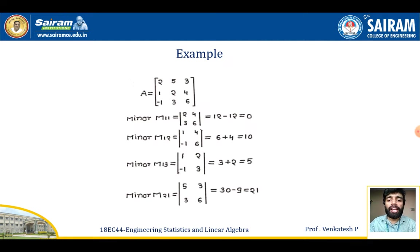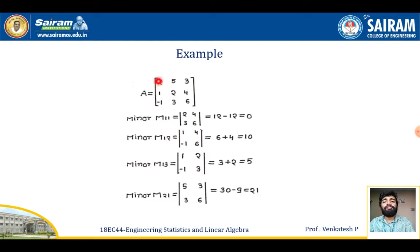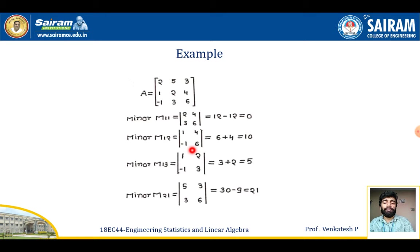For example, let A be the 3×3 matrix: [2, 5, 3; 1, 2, 4; −1, 3, 6]. To find the minor M11 of the entry 2, we take the determinant of [2, 4; 3, 6], which equals 0. For M12, skipping the first row and second column, we get the determinant of [1, 4; −1, 6], which equals 10.